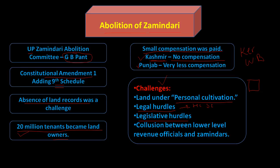Finally, in the implementation phase, lower-level revenue officials were in collusion with the Zamindars and delayed the land reforms.